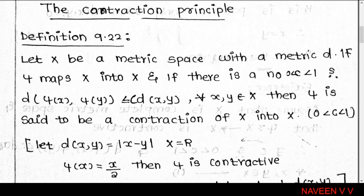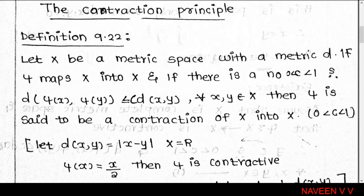Next, the contraction principle. Let X be a metric space with metric d. A mapping φ from X into X is called a contraction, or contractive map, if we can find a real number c such that 0 < c < 1, satisfying d(φ(x), φ(y)) less than or equal to c into d(x, y).